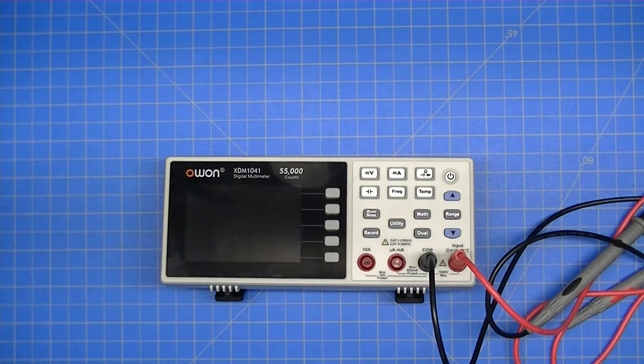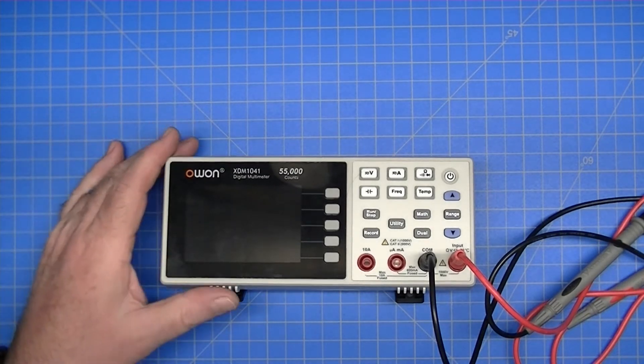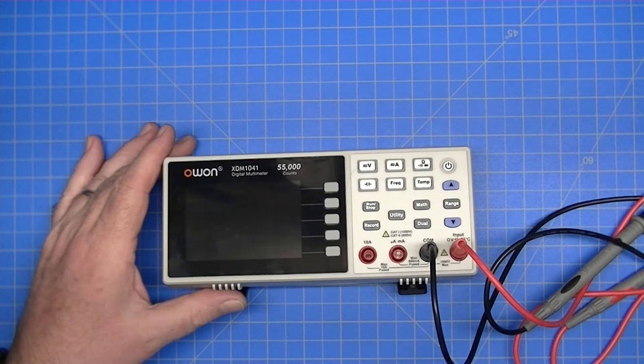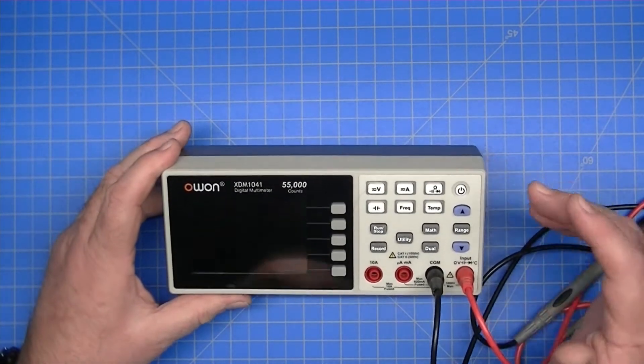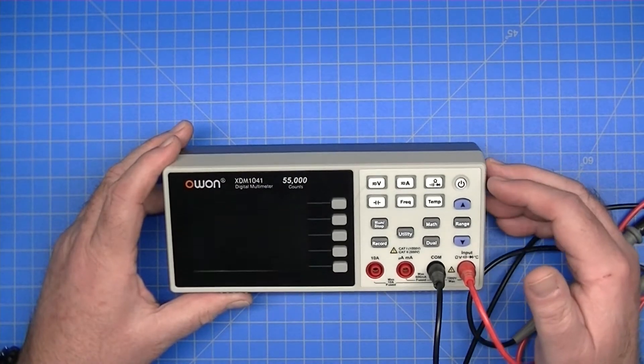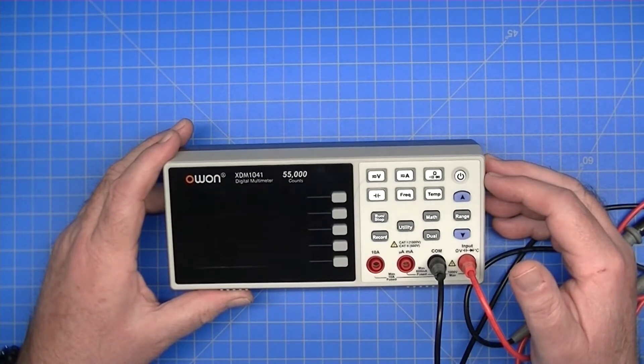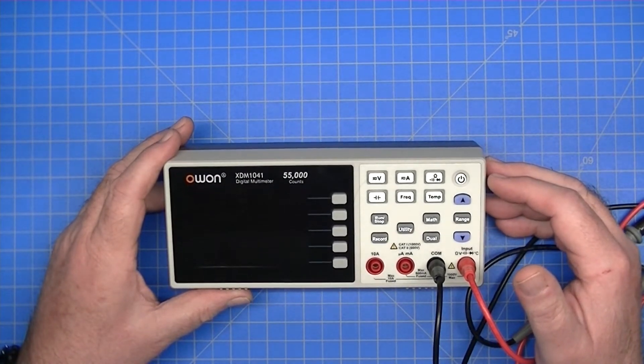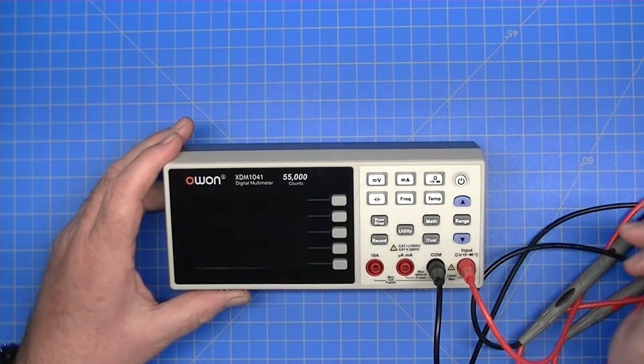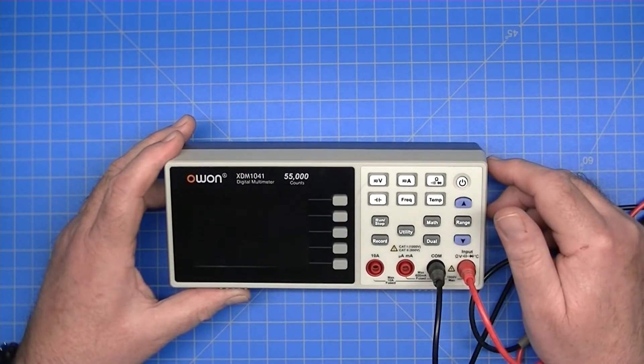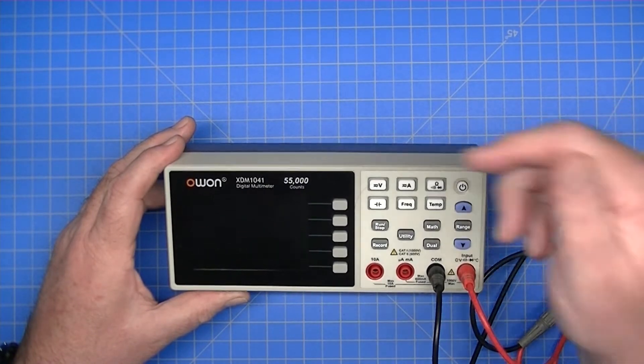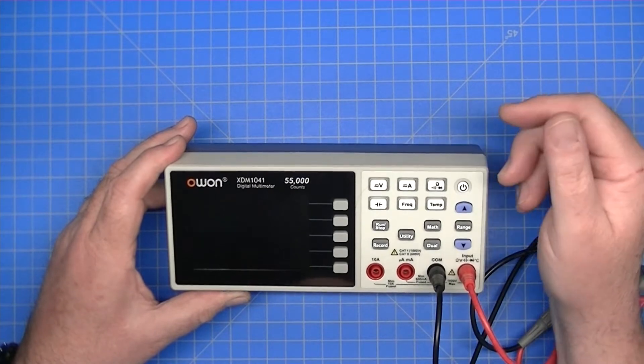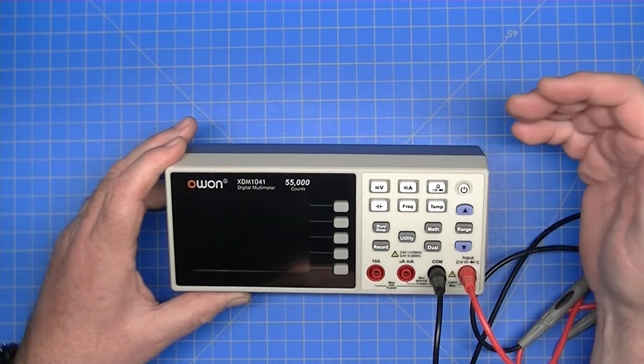In this video, I want to take a quick look at a product I just bought recently. This was not sent to me for review. I actually purchased this with my own funds. This is an OWON XDM1041 Digital Multimeter. As you can see, it predominantly displays that it has 55,000 counts. It looked like a good deal online, and I'll post the info in the description down below. I got this off of Amazon.